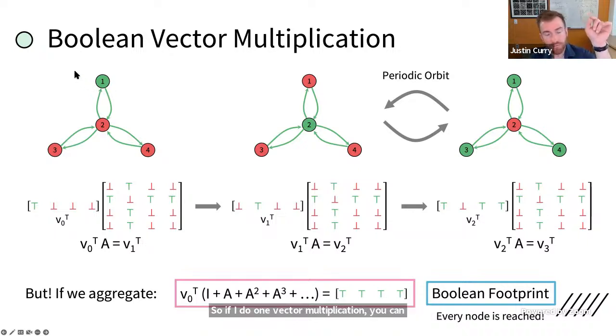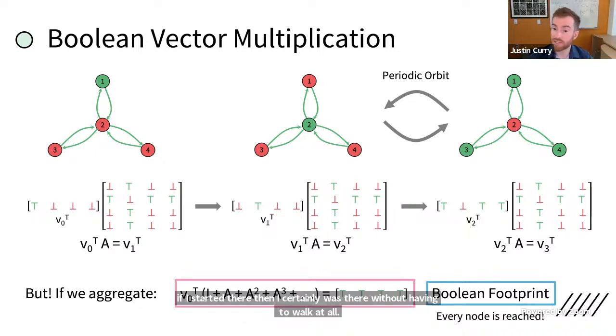So if I do one vector multiplication, you can see that that on state at one changes to an on state at two. And then if I apply this matrix again, you can see that now two can broadcast to everyone. That's a really highly centrally connected node. And so then now everyone outside of two is on. Now, if you go through this matrix multiplication, you'll see there's a periodic orbit that it settles into, but if all you care about is witnessing where was the message and what was its sort of Boolean footprint, you might want to consider, well, let me take my row vector, which had the location of my initial broadcast, and let me apply it to this whole series of adjacency matrices and their higher powers. Of course the identity to letting, you know, like, well, if I started there, then I certainly was there without having to walk at all. So in this case, we see that a message at this node eventually gets to every other node.